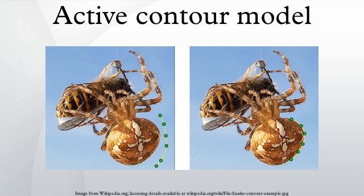A snake is an energy minimizing, deformable spline influenced by constraint and image forces that pull it towards object contours, and internal forces that resist deformation. Snakes may be understood as a special case of the general technique of matching a deformable model to an image by means of energy minimization. In two dimensions, the active shape model represents a discrete version of this approach, taking advantage of the point distribution model to restrict the shape range to an explicit domain learned from a training set. Snakes do not solve the entire problem of finding contours in images, since the method requires knowledge of the desired contour shape beforehand.